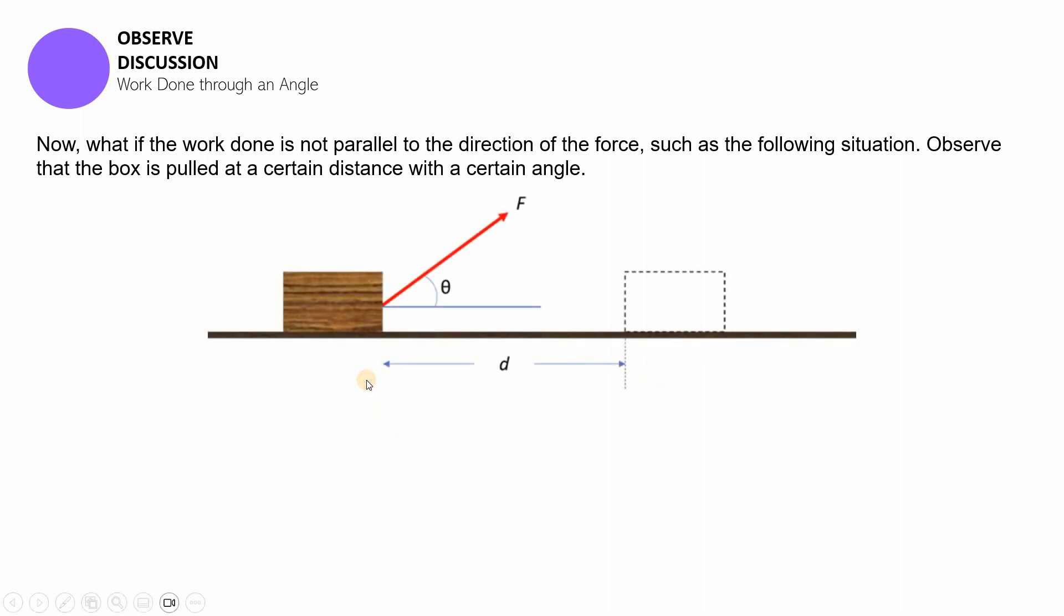But those were actually examples where the force applied and the distance that was covered are parallel with each other. Now, what if the distance covered is completely horizontal, but the work or the force was applied with respect to one angle? Such as in this case. Can we say that there is work done? So I wanted to speculate and think for yourself.